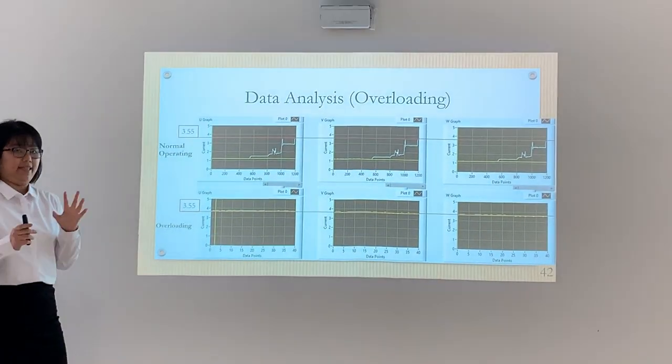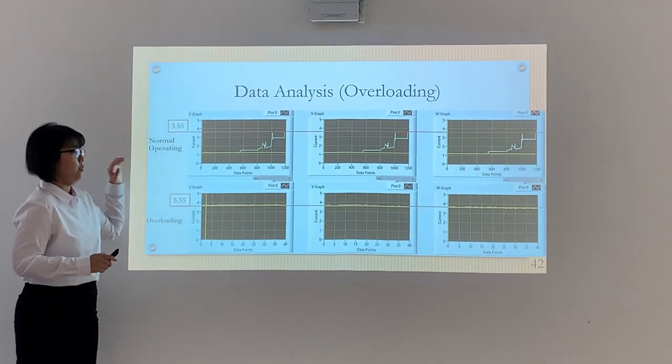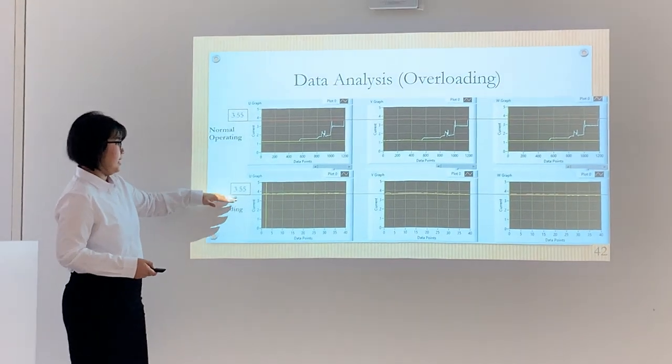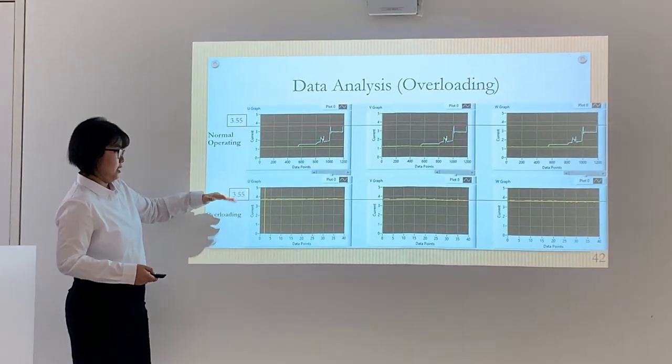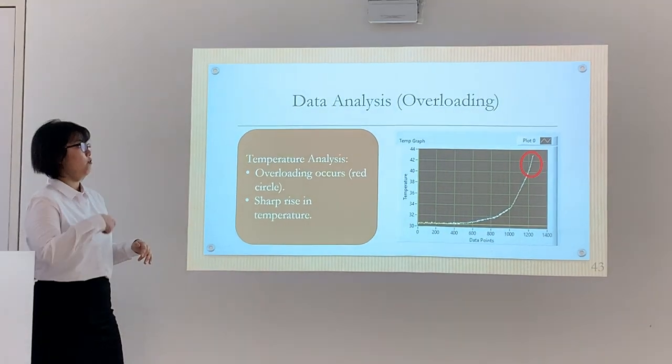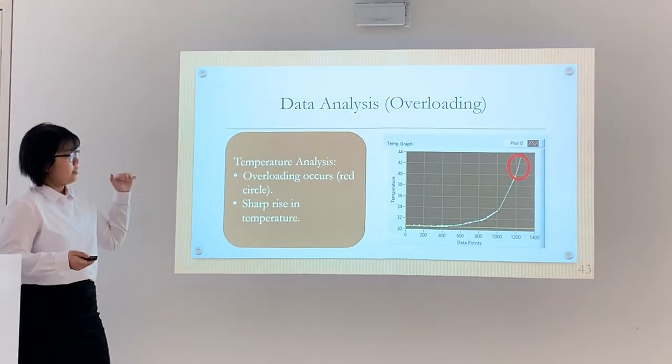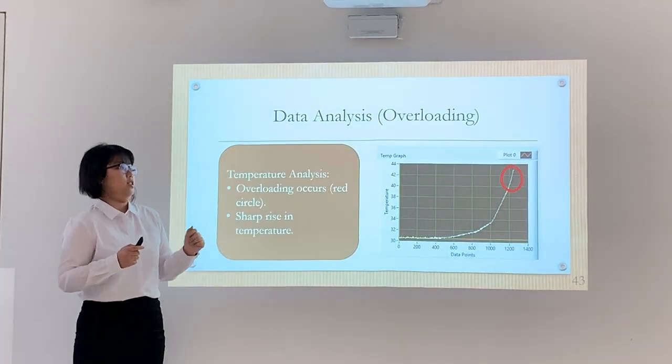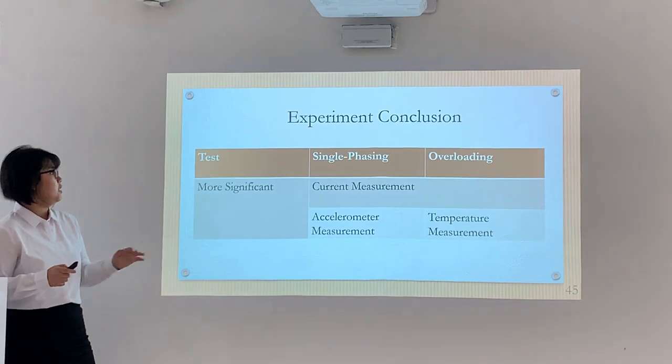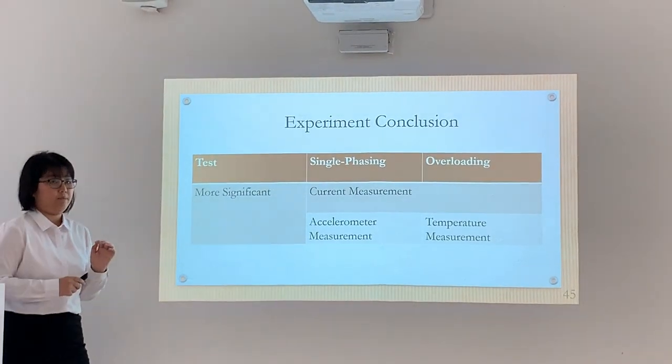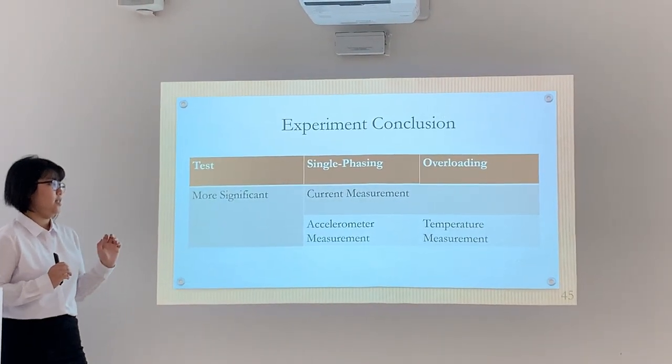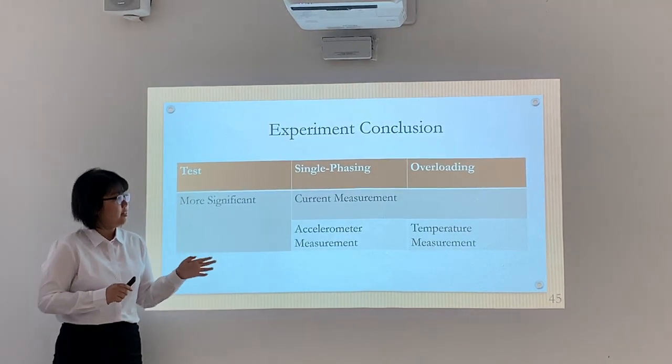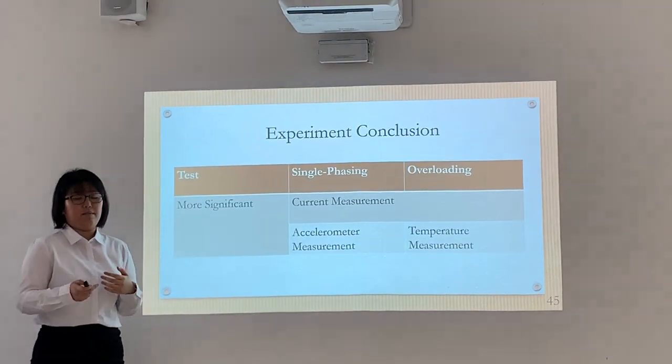Next is the overloading analysis. The red line means the current is above the rated current for the motor which is at 3.5 amperes. In this case the current is above the red line. For overloading, the temperature shows a spike with red samples, and this is where the fault occurs. In conclusion, current measurement is significant in both tests. But individually, single phasing is significant with vibration measurement, and overloading is more significant with temperature measurement.